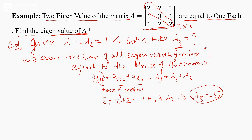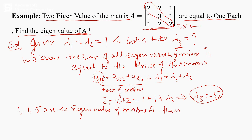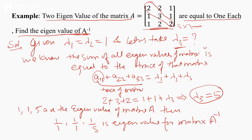The third eigenvalue is 5, so 1, 1, and 5 are the eigenvalues of matrix A. Therefore, 1/1, 1/1, and 1/5 are the eigenvalues of matrix A inverse. Using this property, we can easily find eigenvalues of A inverse without actually computing the inverse matrix.